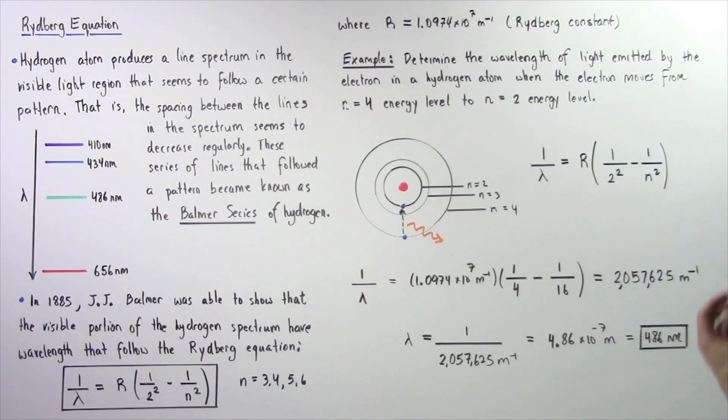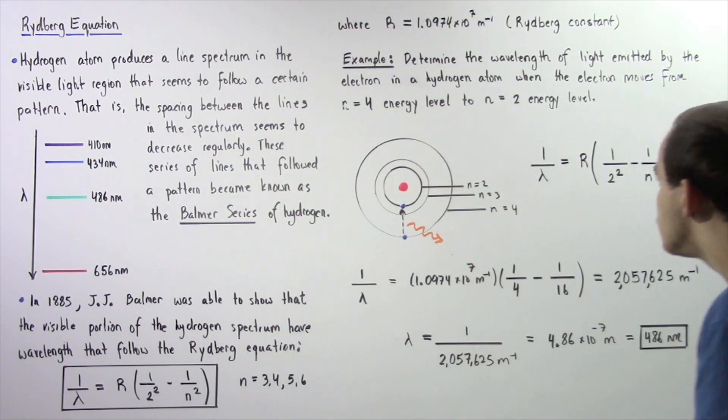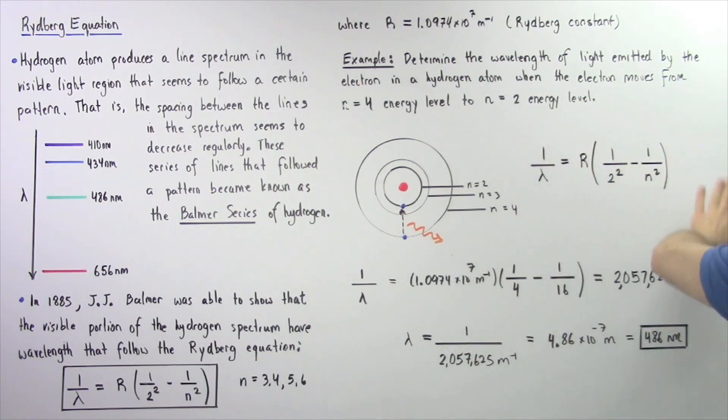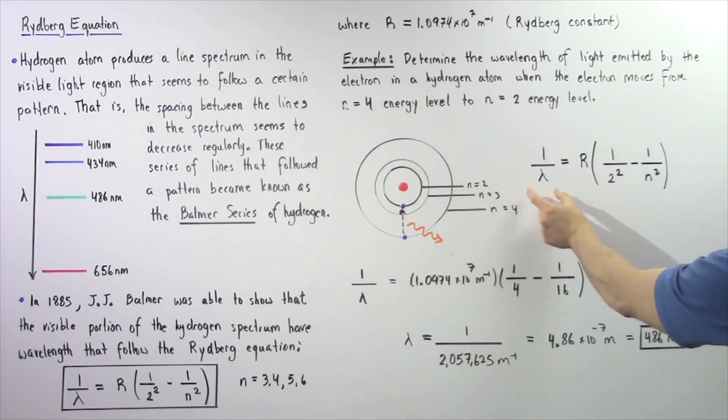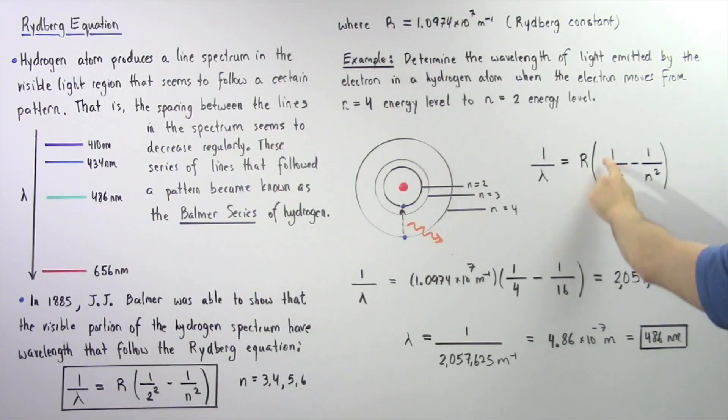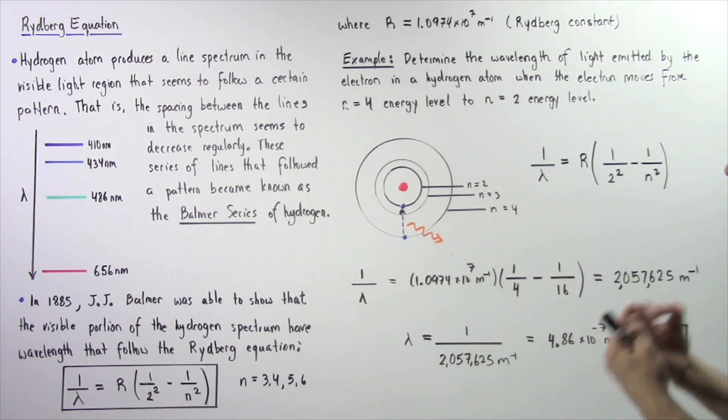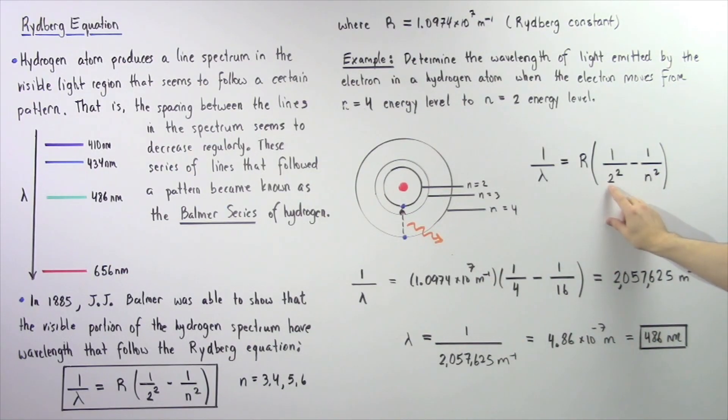So we basically want to calculate what the wavelength is of this particular light. So to calculate, we have to apply the Rydberg equation. So 1 divided by lambda is equal to R, the Rydberg constant, multiplied by 1 divided by 2 squared minus 1 divided by n squared. So our n in this case is simply 4.